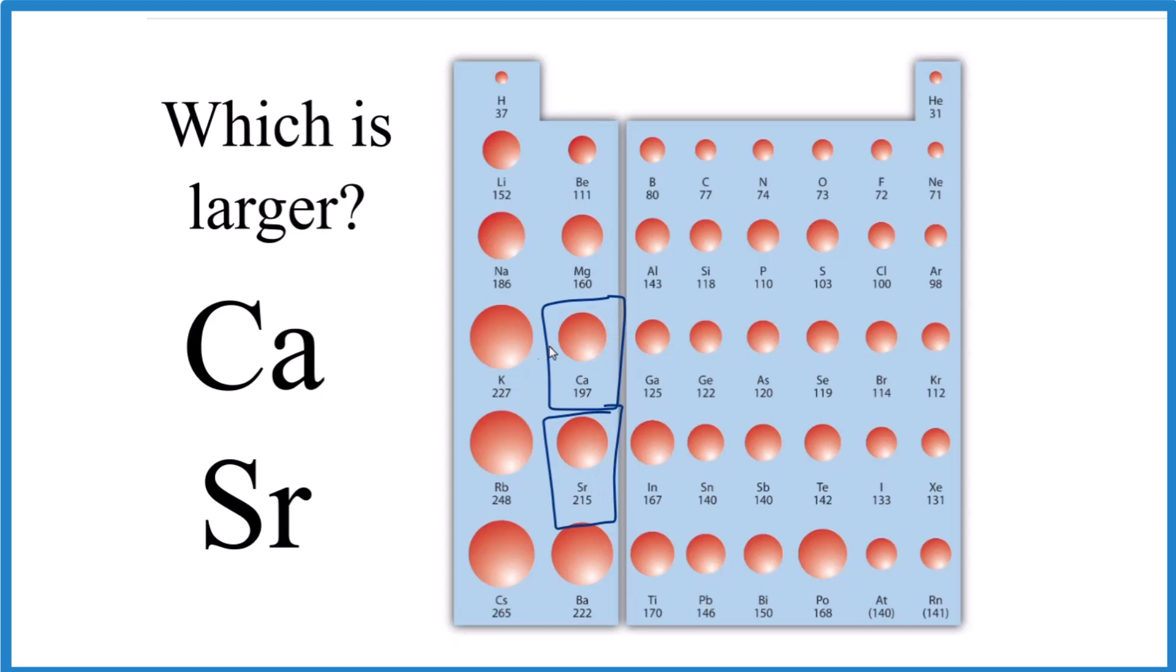You can see that strontium is a little bit bigger than calcium here, but if you don't have these relative sizes, these pictures, you can figure it out by realizing that as you go down groups on the periodic table, the atomic radii increases.